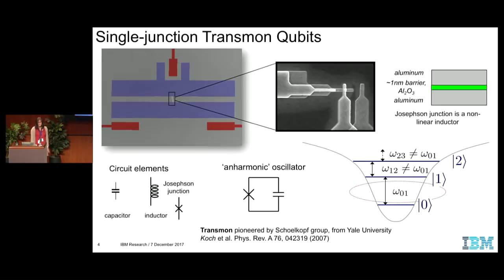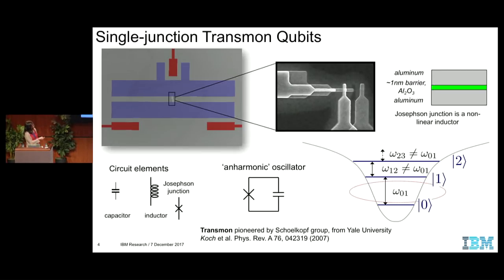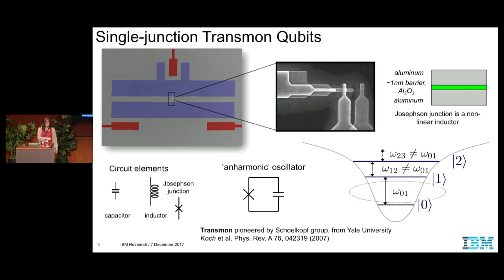From the very basic: the type of qubits that we have is single junction transmon qubits. We have our Josephson junction — it's a layer of aluminum, aluminum oxide, aluminum. The Josephson junction is a nonlinear inductor, which for a transmon qubit is shunted by a large capacitor. So rather than having a harmonic oscillator, you can make this anharmonic oscillator so that the lowest two energy levels are separated from the higher levels. We're going to use the lowest two energy levels as our qubits.